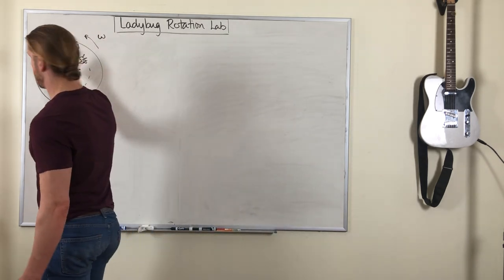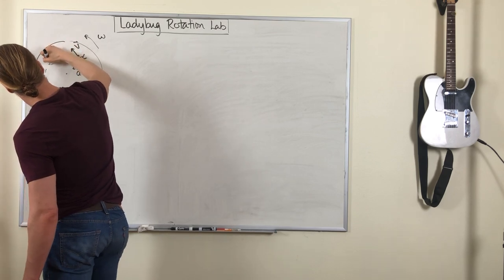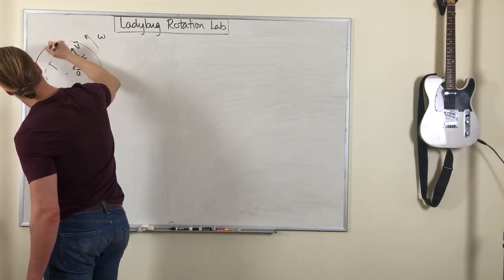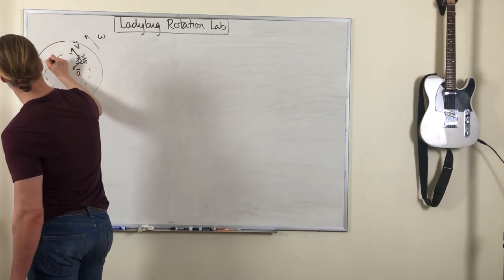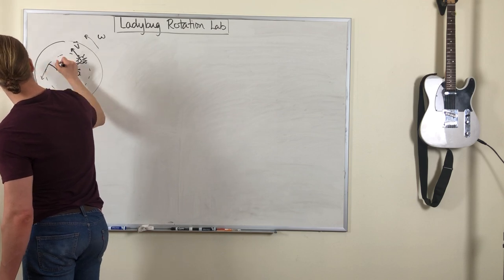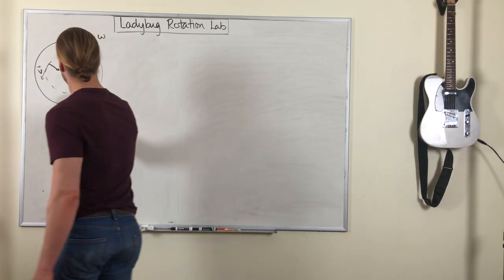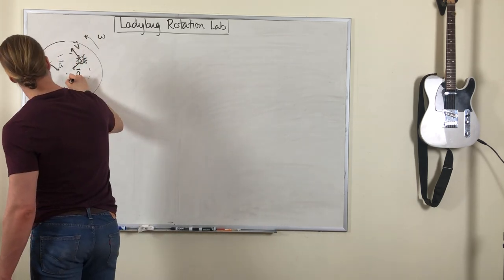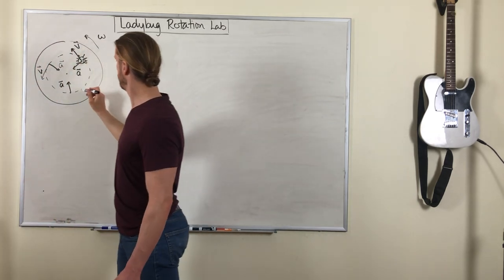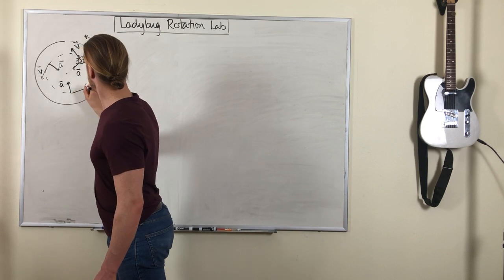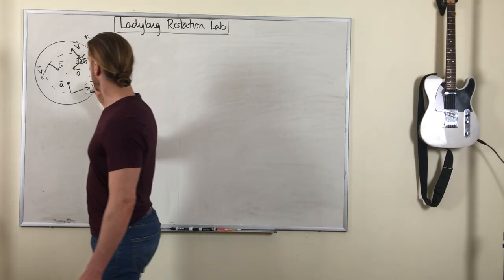So any other points, or any other instance in time, maybe over here, you'll find the acceleration vector still has the same magnitude that's pointing toward the center. The velocity vector still has that same magnitude and is tangent to the circular path. Maybe one other point over here, acceleration vector still toward the center, velocity vector is still tangent to that path.